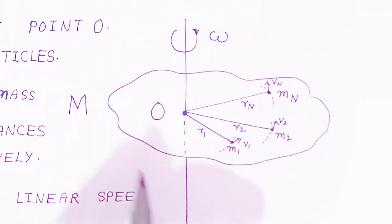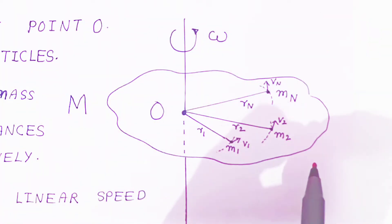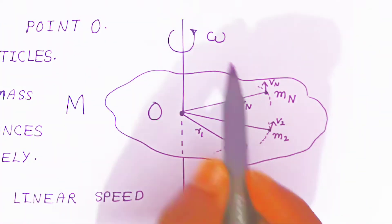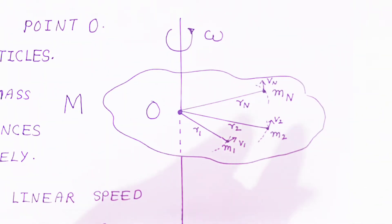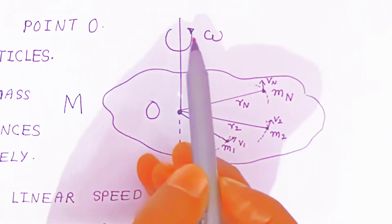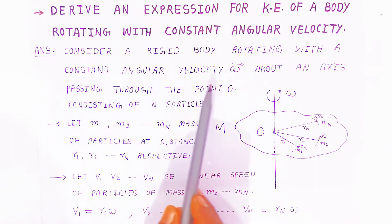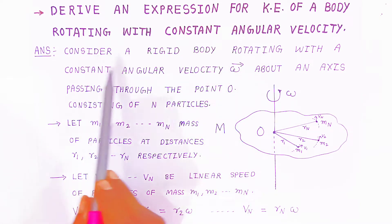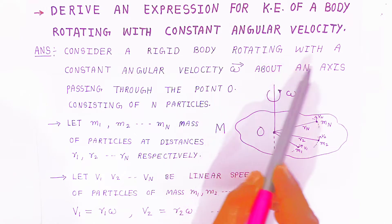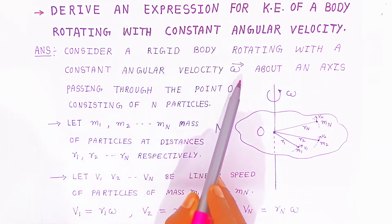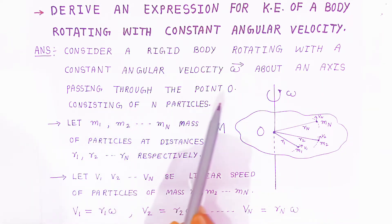This is the body — it is a rigid body which is irregular. It is rotating with constant angular velocity. Here I have shown the angular velocity symbol, that is omega. This whole body is rotating with constant angular velocity omega. Consider a rigid body which is irregular and rotating with a constant angular velocity omega bar about an axis passing through the point O.